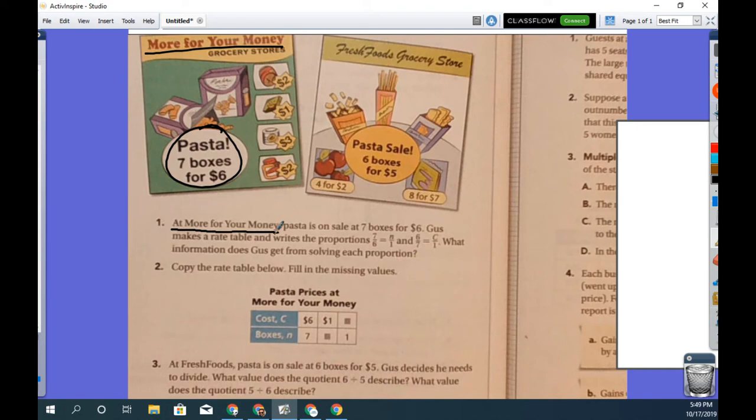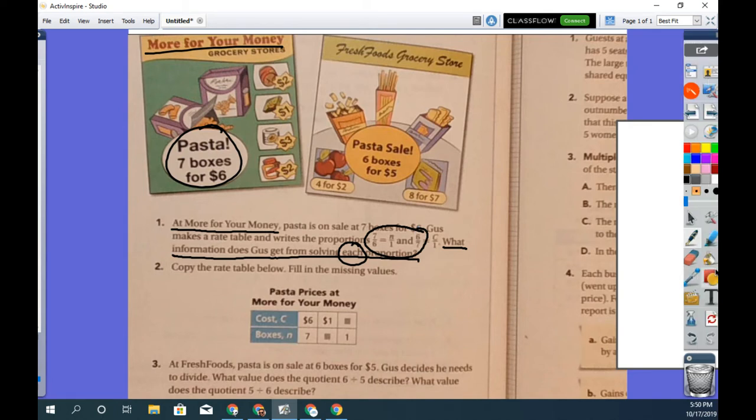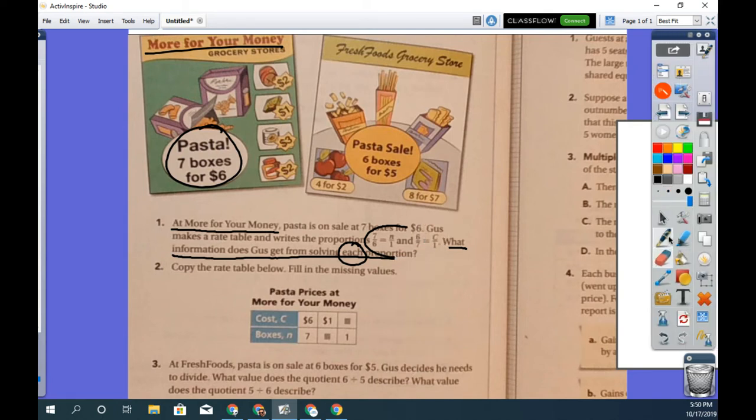So as we read our problem, there's nothing really to calculate here. We're trying to answer this question: What information does Gus get from solving each proportion? So here we got to ask ourselves, okay, it says each proportion. So that must mean there's more than one. So we have one proportion here. And one here.